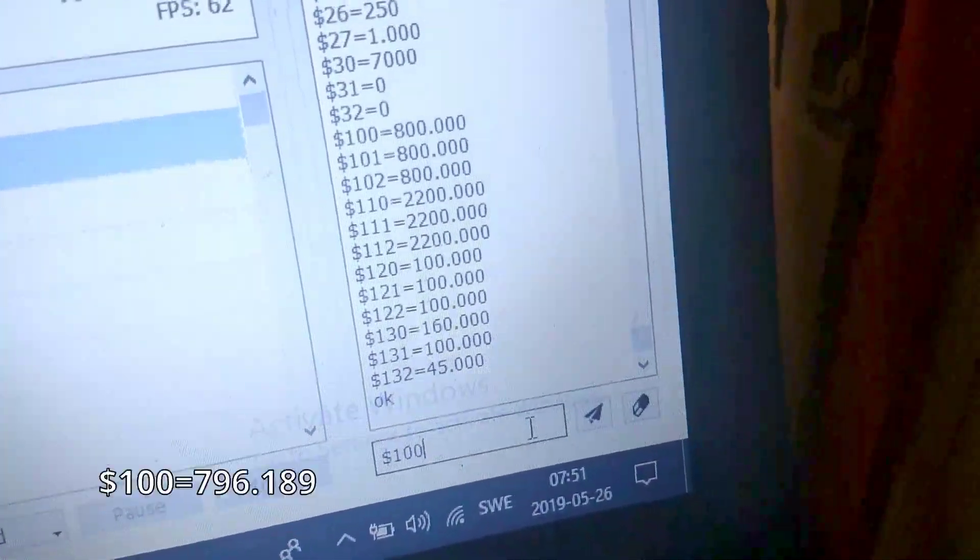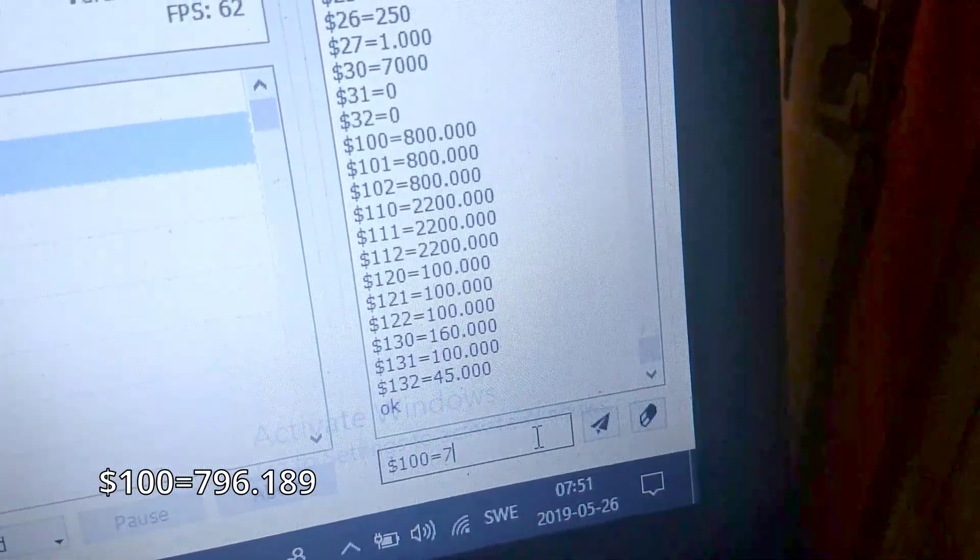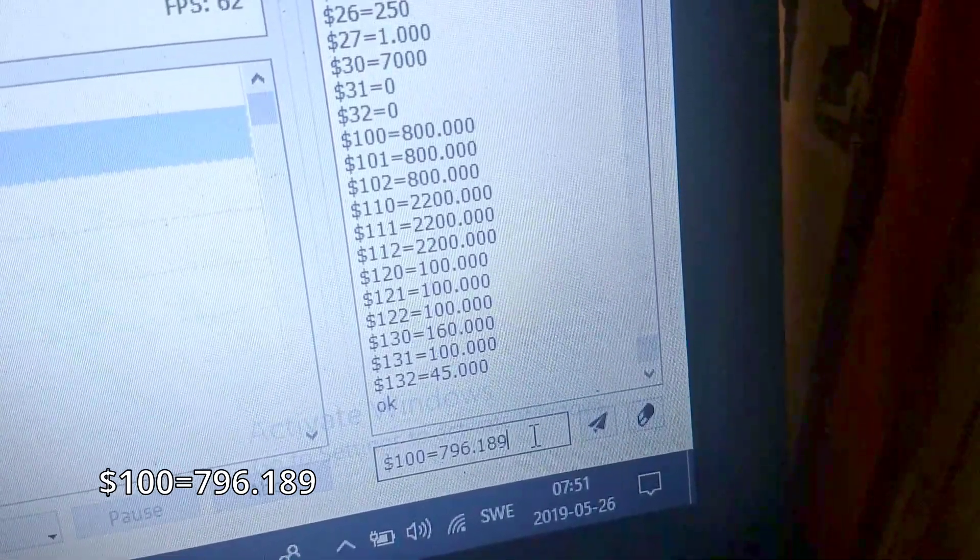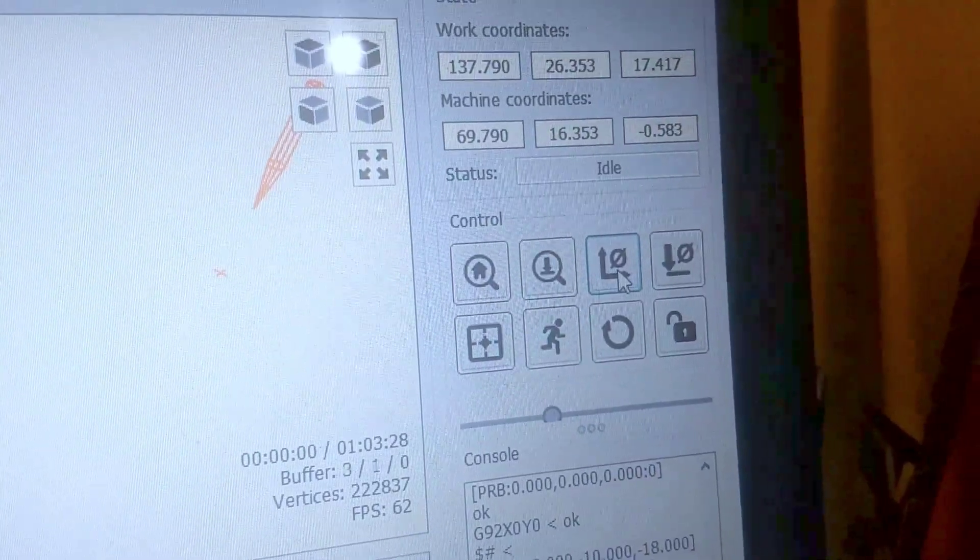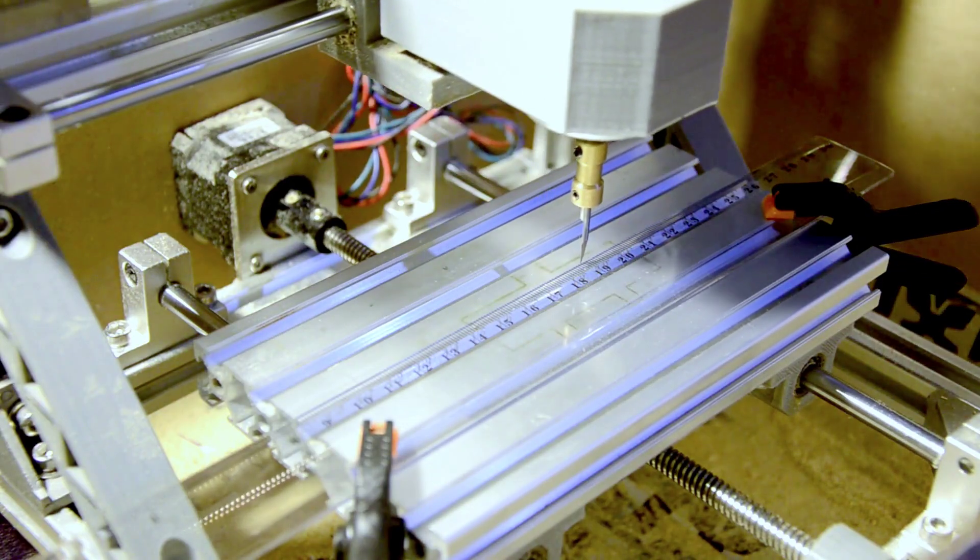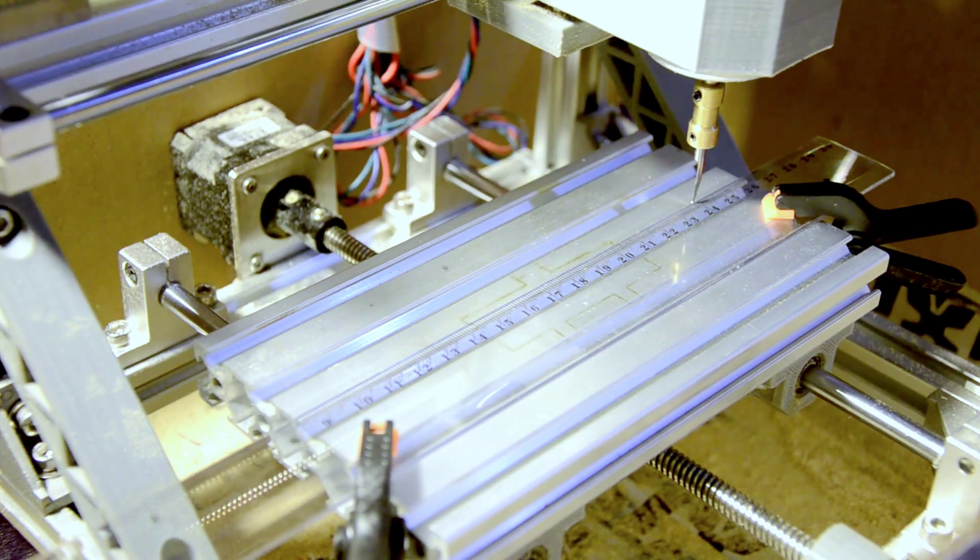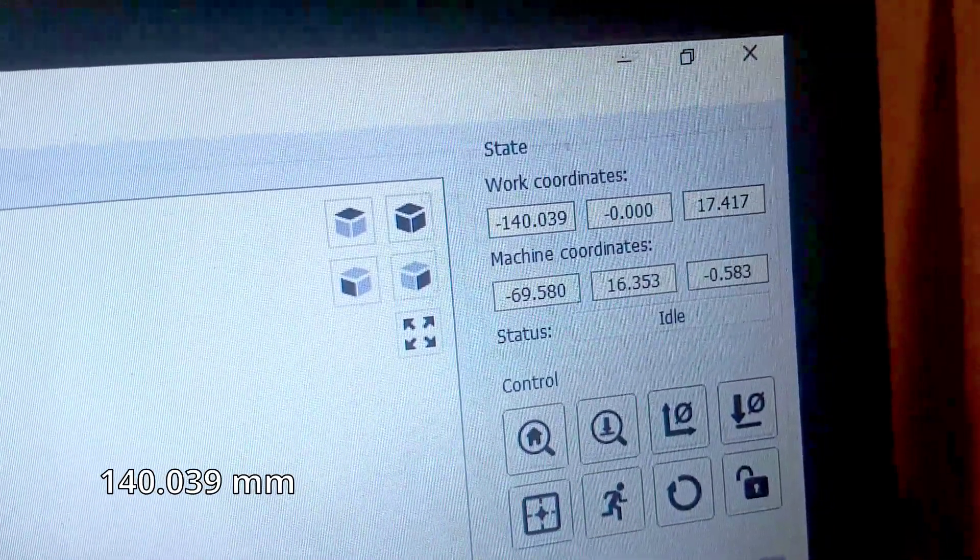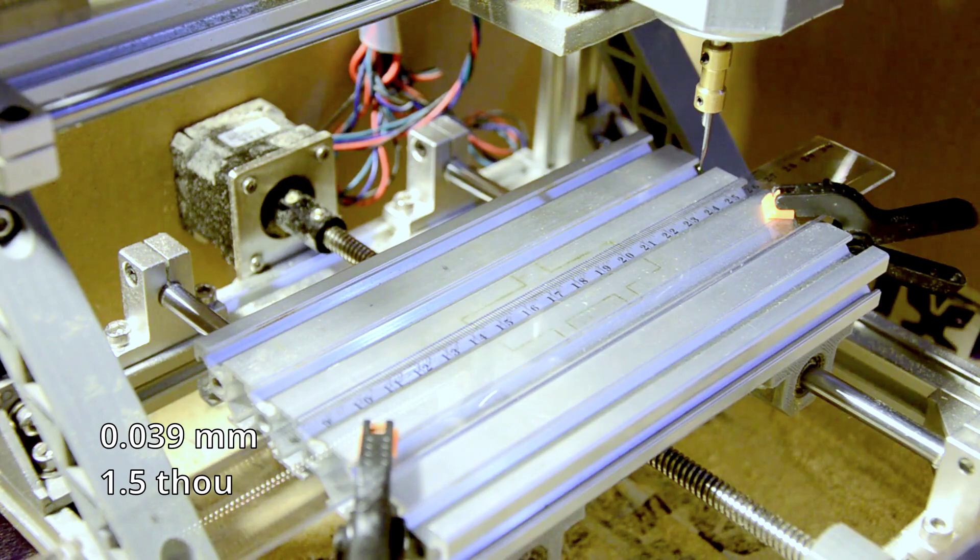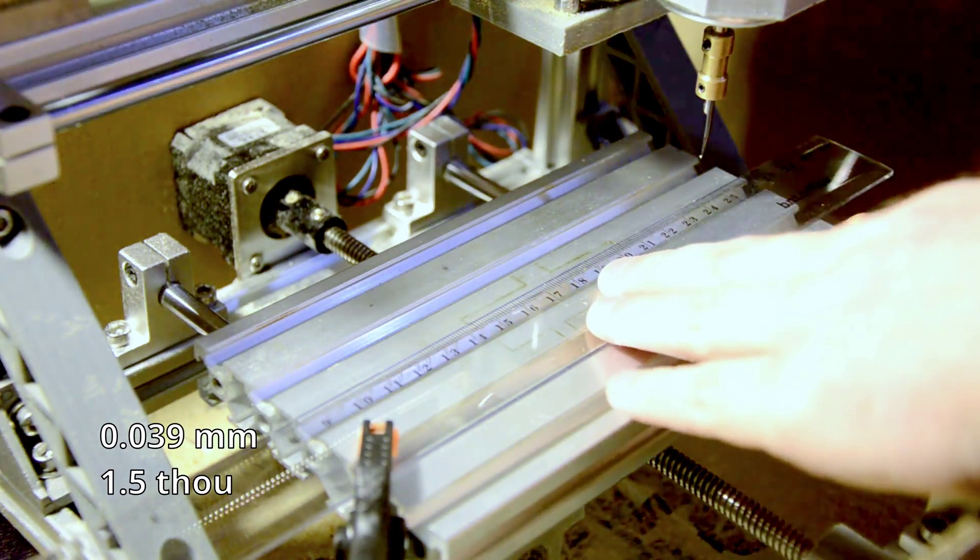Update the configuration of the machine and reset it so we can make the same measurement again. A hundred and forty point zero three nine millimeters. Four hundredths of a millimeter, or one point five thou, is much better.